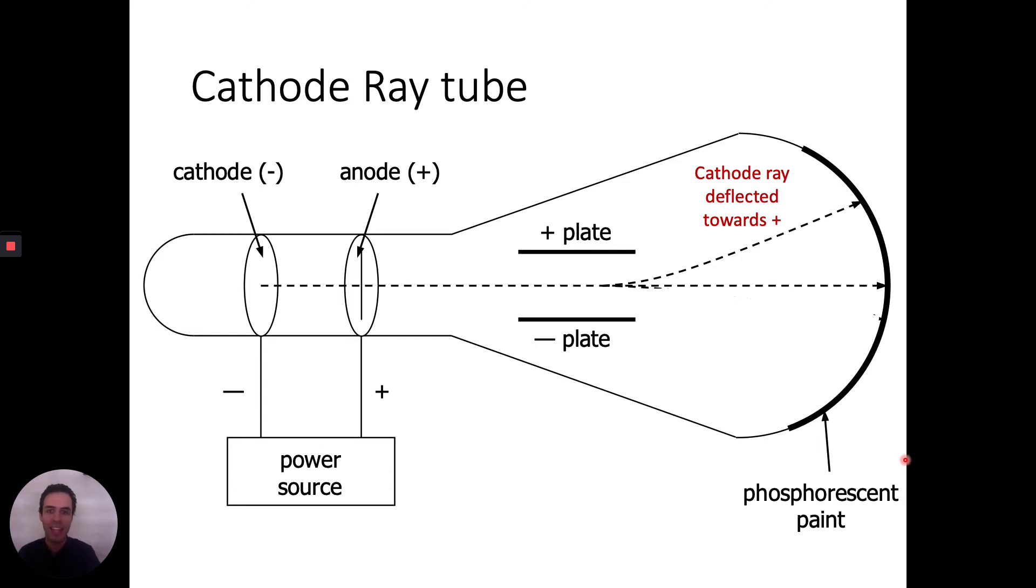Now something else cool happened. Instead of a cathode ray, let's shoot something else through this tube. Let's shoot a beam of hydrogen ions. We know that hydrogen ions are the smallest atom there is. There is nothing smaller than a hydrogen atom. We also know that hydrogen atoms have a positive charge. So which direction do you think the hydrogen atoms will travel? What happens is that the hydrogen atoms got bent towards the negative plate. That makes sense because the positive hydrogen got attracted to the negative plate and bent down. But what's really interesting here is the amount of deflection. Look how much the cathode ray got deflected and look how much the hydrogen ions got deflected.